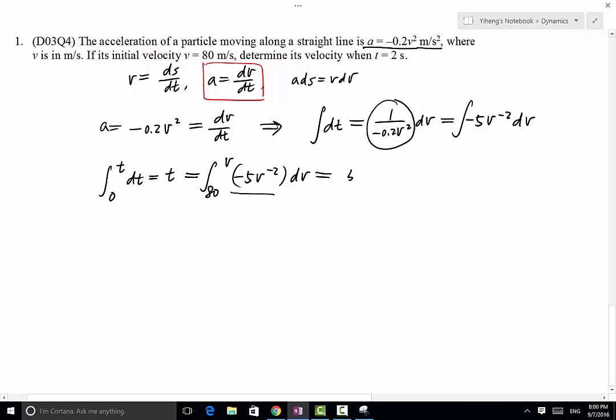That's positive 5v^(-1), evaluated from the lower limit 80 to higher limit v. This equals to 5 times (1/v - 1/80).